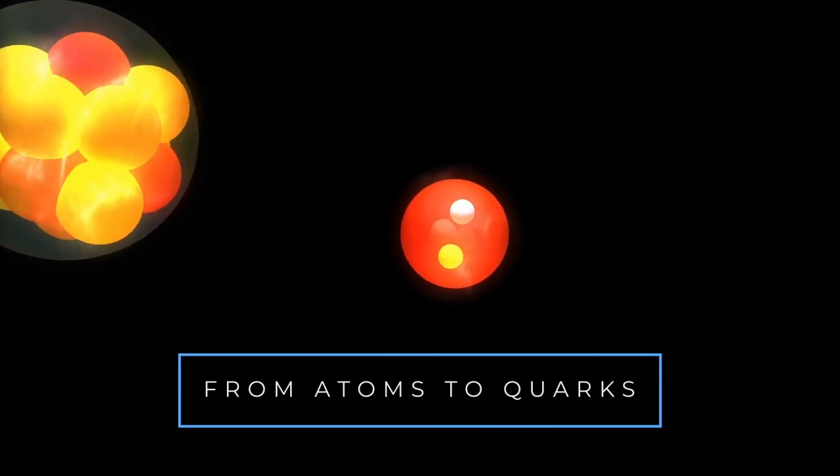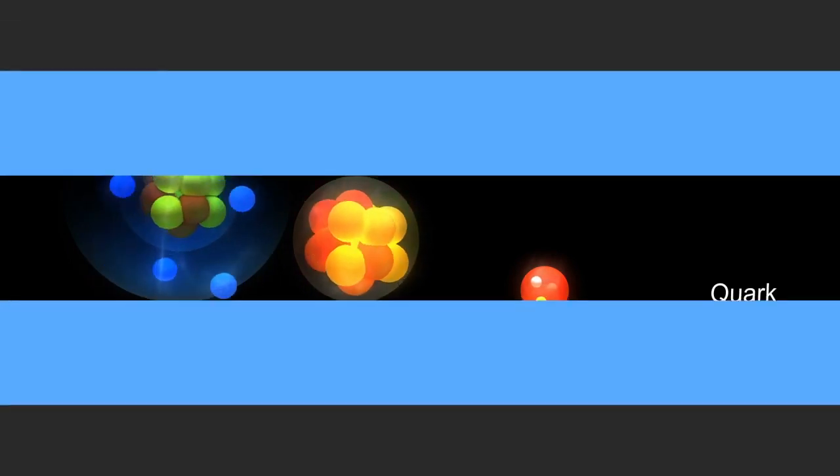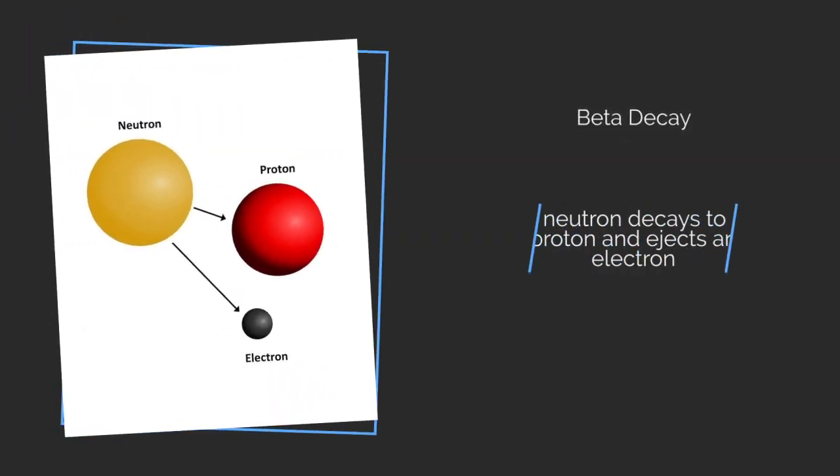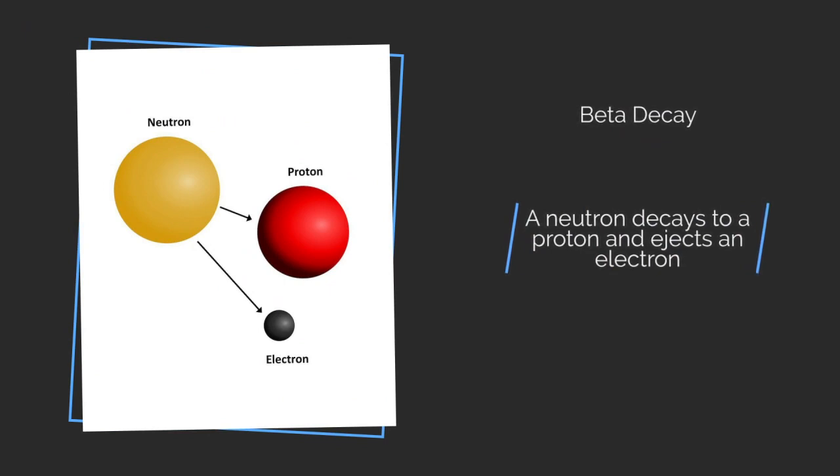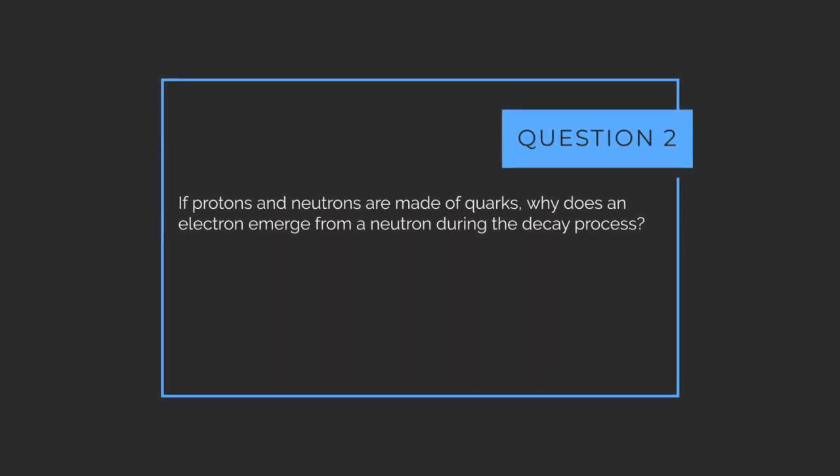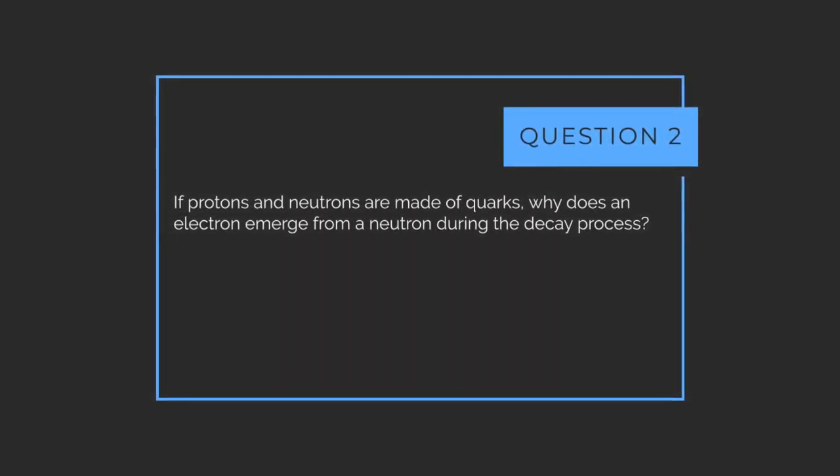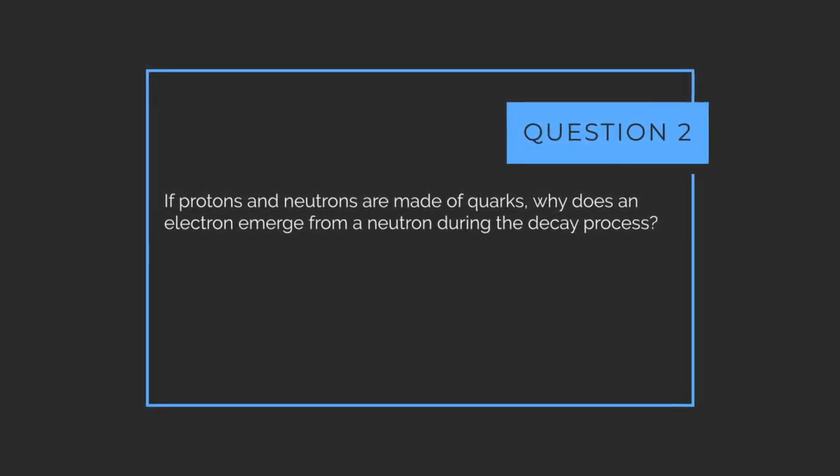Breaking it down further, inside the atom's nucleus are nucleons such as protons and neutrons, which are believed to be made of quarks. But in a process known as beta decay, a neutron can decay to become a proton while ejecting an electron. So here's the second question: If protons and neutrons are made of quarks, why does an electron emerge from a neutron during the decay process?